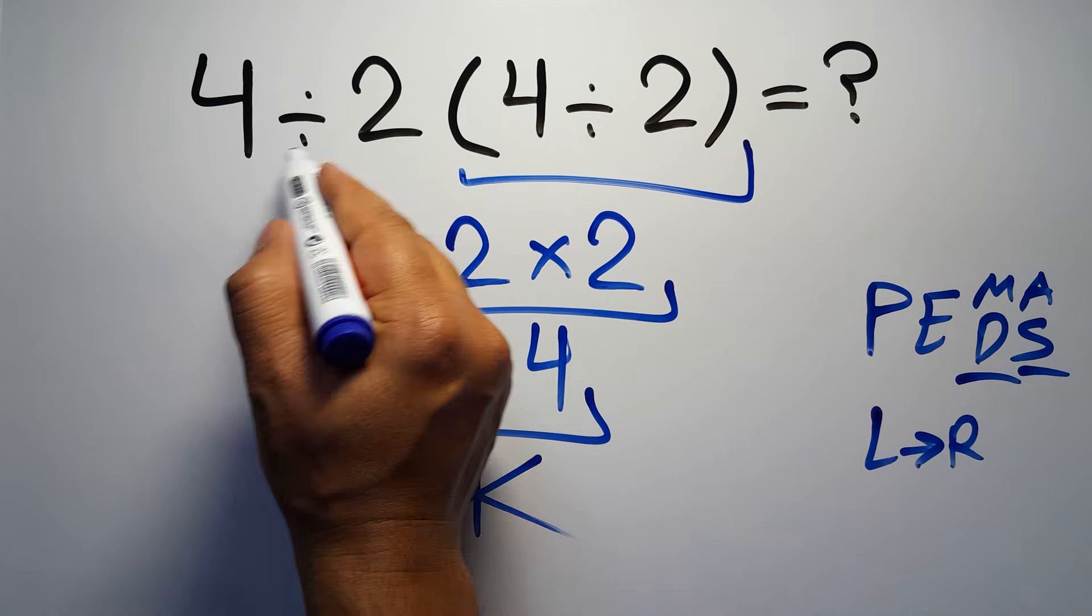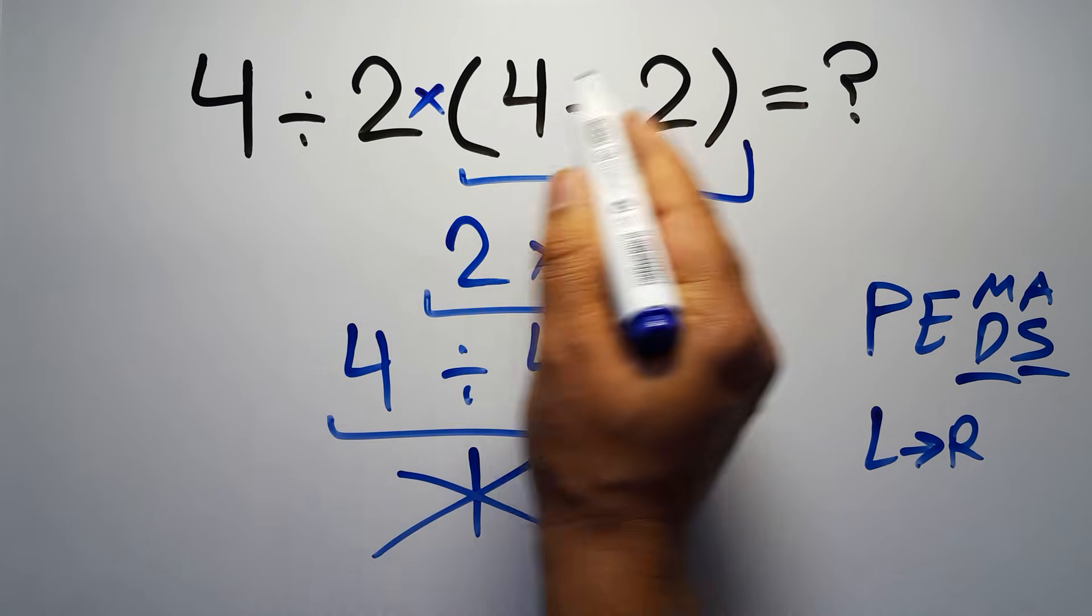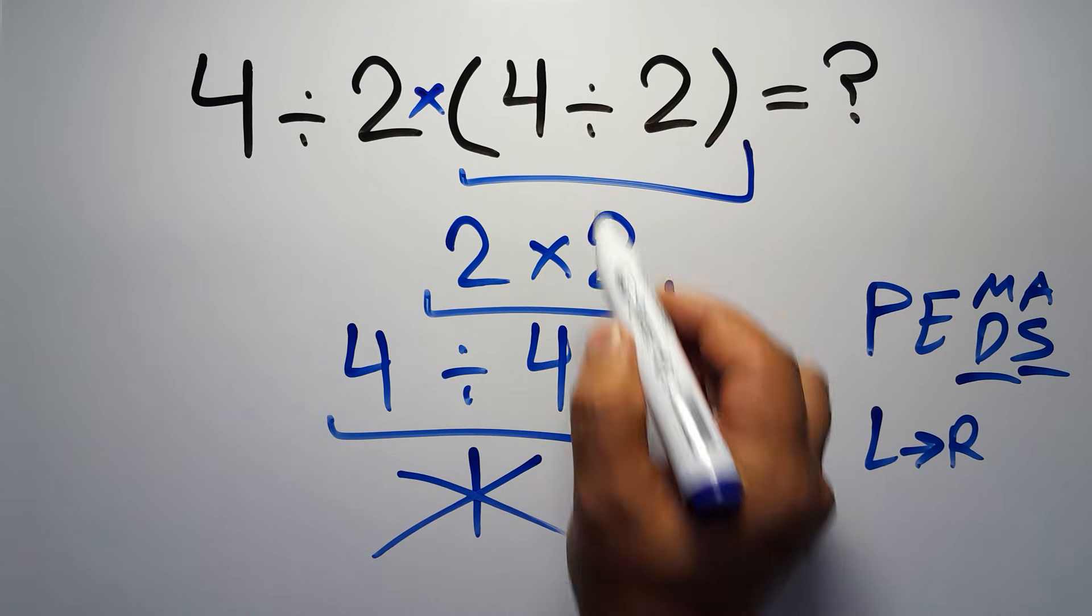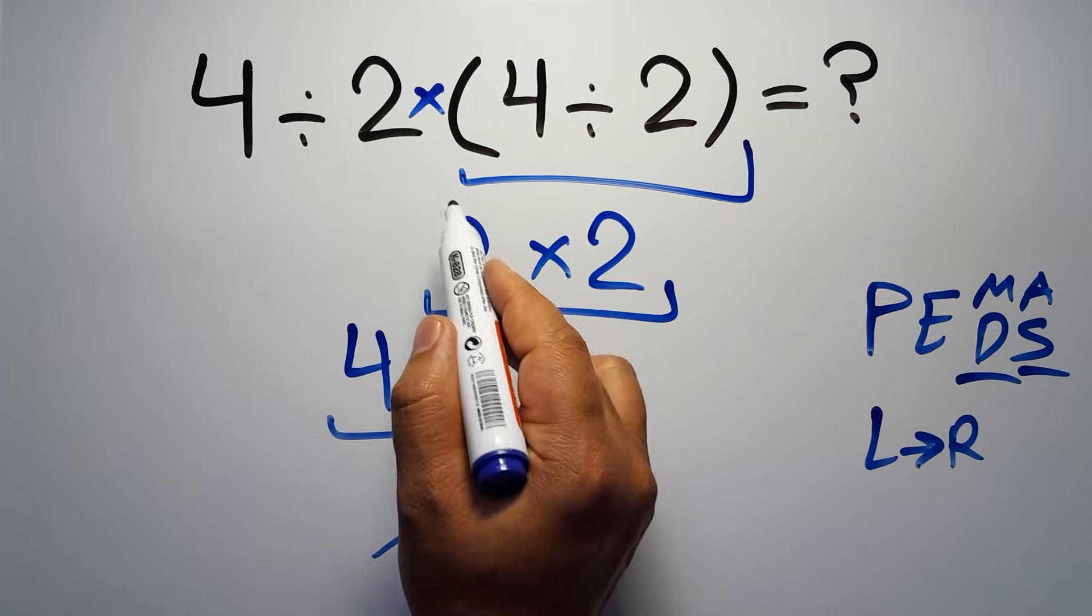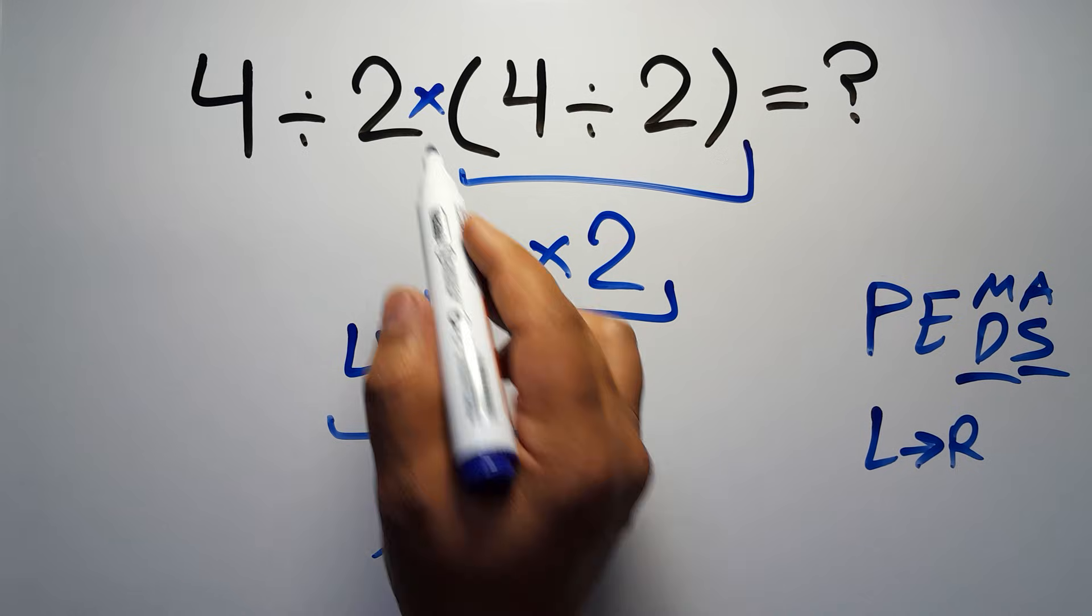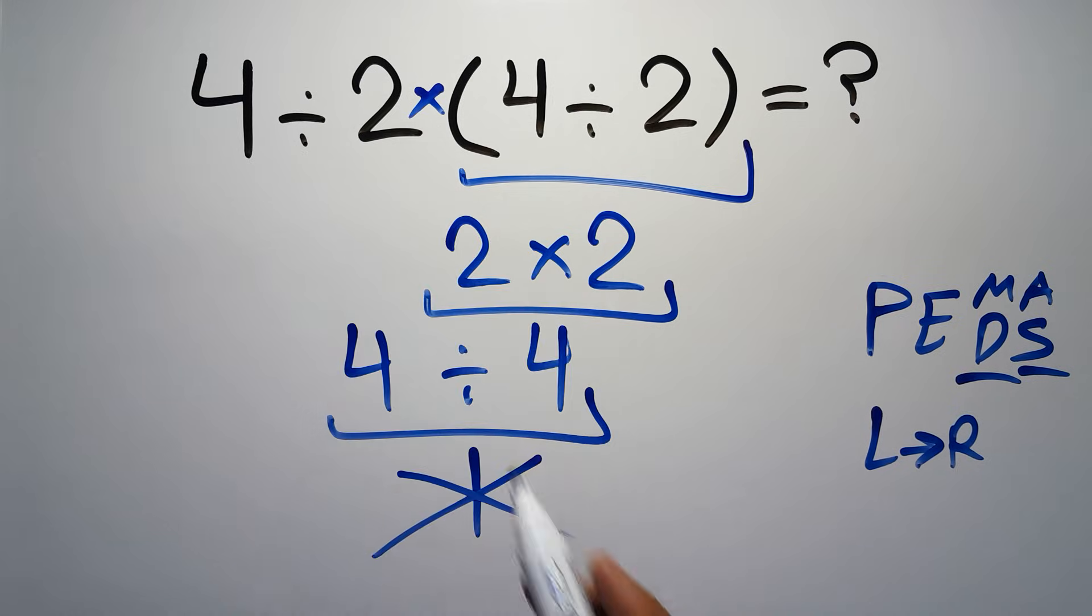In this expression we have one division, one multiplication, and one parentheses. Inside this parentheses we have one division. Here we have a multiplication, because in mathematics when a number is placed next to parentheses it means multiplication, and we usually don't write the multiplication sign for brevity.